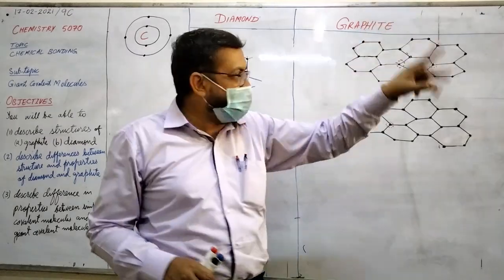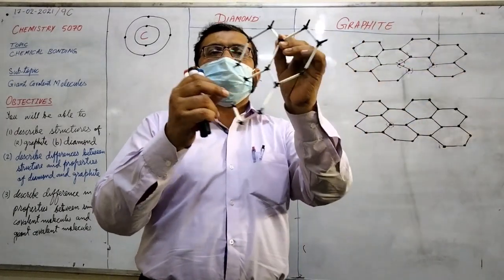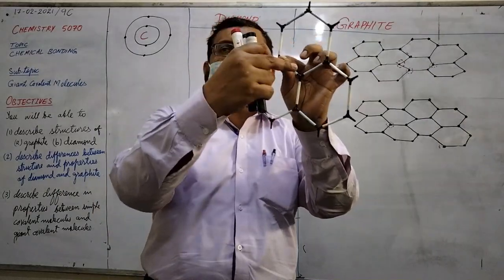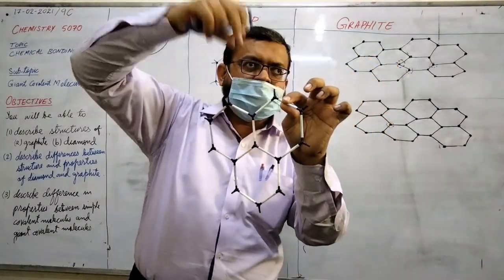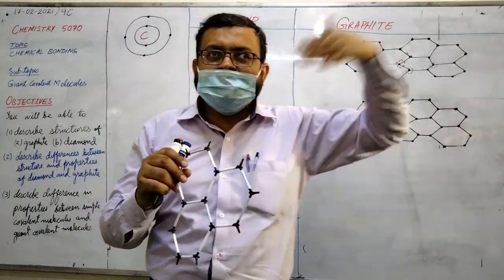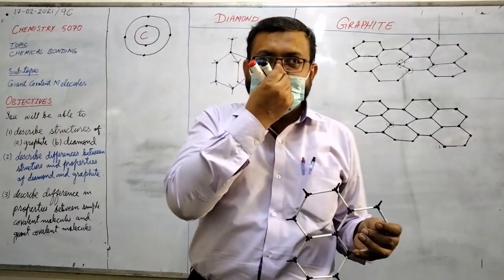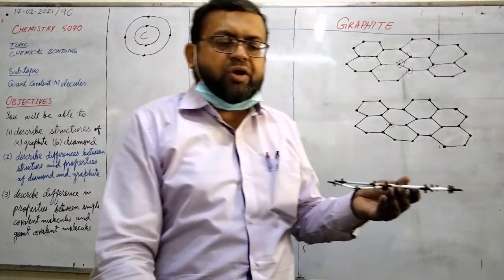You can point out any carbon atom - it is forming one, two, three covalent bonds. But definitely it is forming an unlimited structure because it is not a short structure. It is an unlimited structure. That's why it is called a giant covalent molecule.